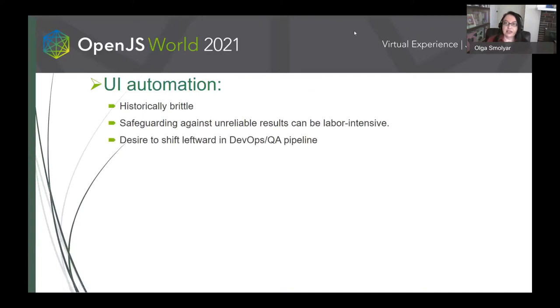UI automation has historically been regarded as a brittle undertaking, requiring considerable effort to safeguard against unreliable results and flakiness. At the same time, there has been a desire to shift various automation suites leftward in a DevOps or QA pipeline. This in turn increases pressure on the automation suites to be more reliable and more robust.